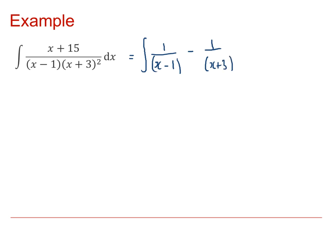And then remember because there's a repeated factor, there's another one which has got x plus 3 squared on the denominator and the value of the coefficient for that one was 3.